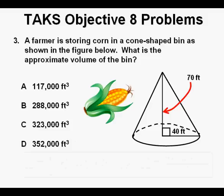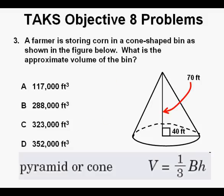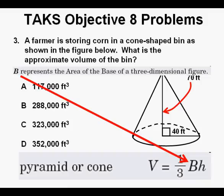Problem 3. A farmer is storing corn in a cone-shaped bin as shown in the figure below. What is the approximate volume of the bin? For this problem, we'll again resort to our TAKS formula chart, this time for the volume of the cone. And we see here that the formula is V equals one-third B times H. We need to be aware that in this formula, the capital B is the area of the base of the cone. This is right from the TAKS formula chart.